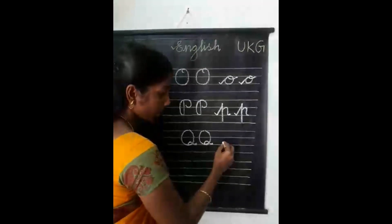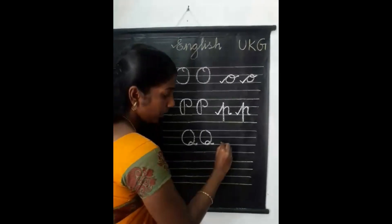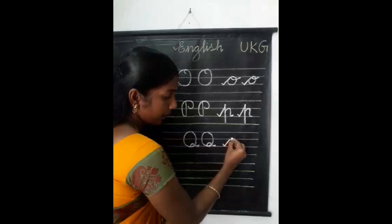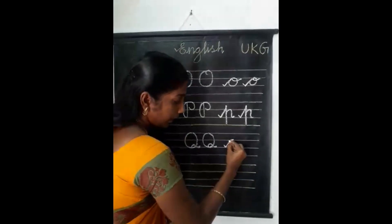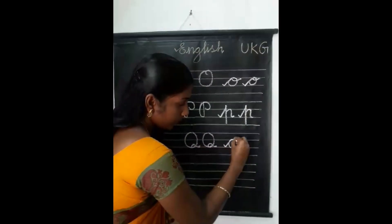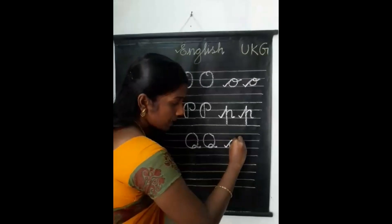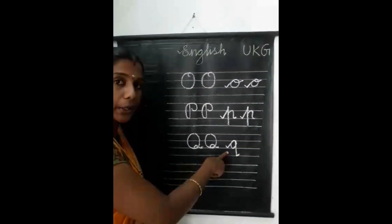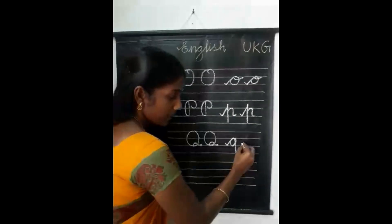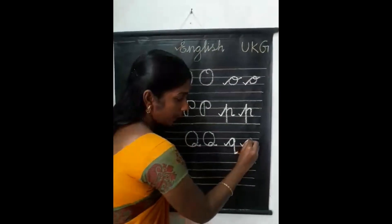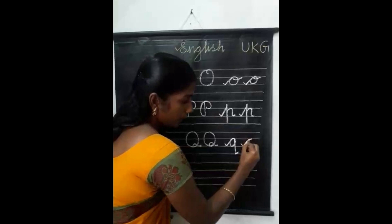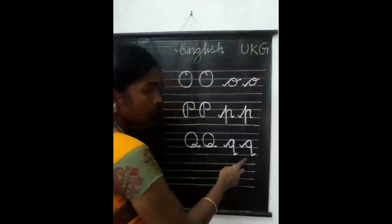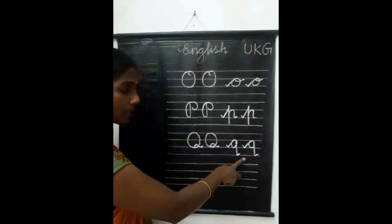Small letter Q. From the third line, write a slant line, then write a curve, then from here write a standing line, put on a small stroke. Small letter Q.